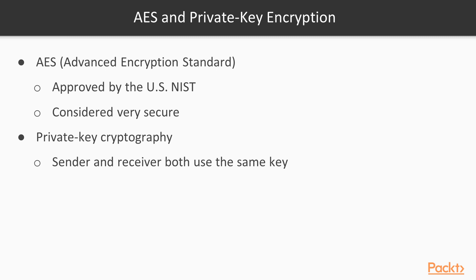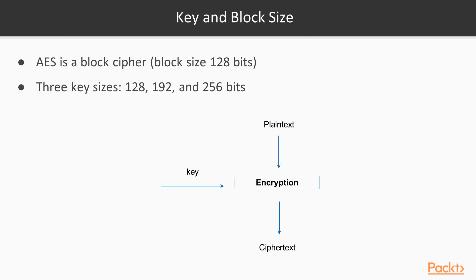It is private key cryptography, which is the kind of cryptography that has been used for thousands of years, in which both the sender and the receiver use the same key. It's a block cipher, so the input data has to be put in blocks 128 bits long, and a block of plain text is encrypted with a key, producing a block of ciphertext. There are three key sizes: 128, 192, and 256 bits. The most common type of AES is the 128-bit key size, and that's what we're going to use here.